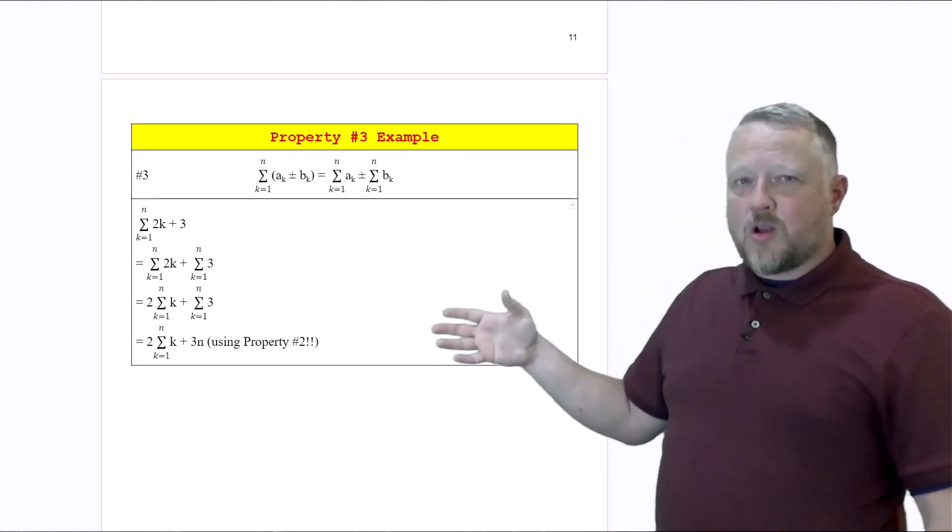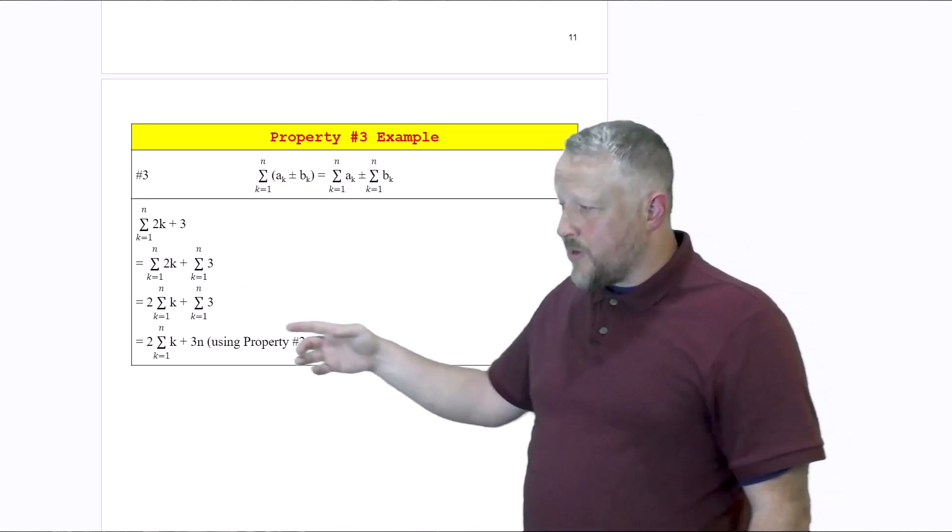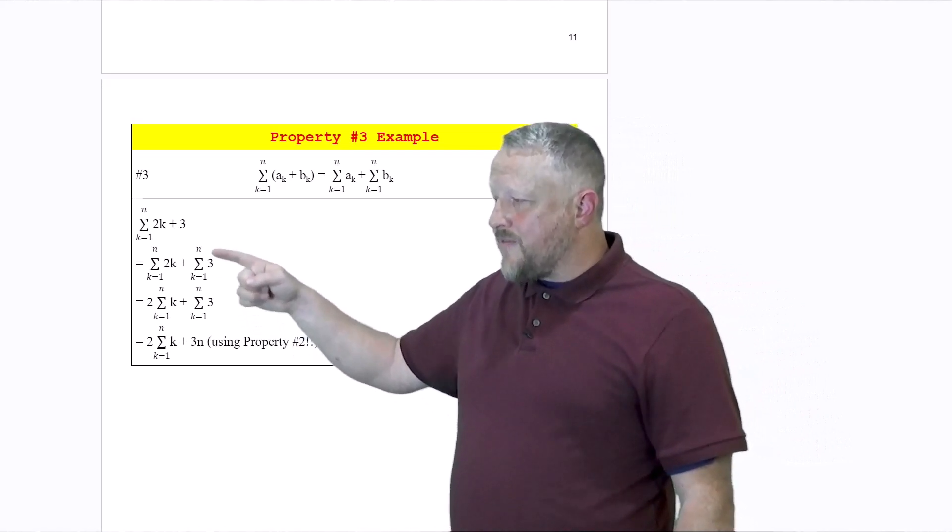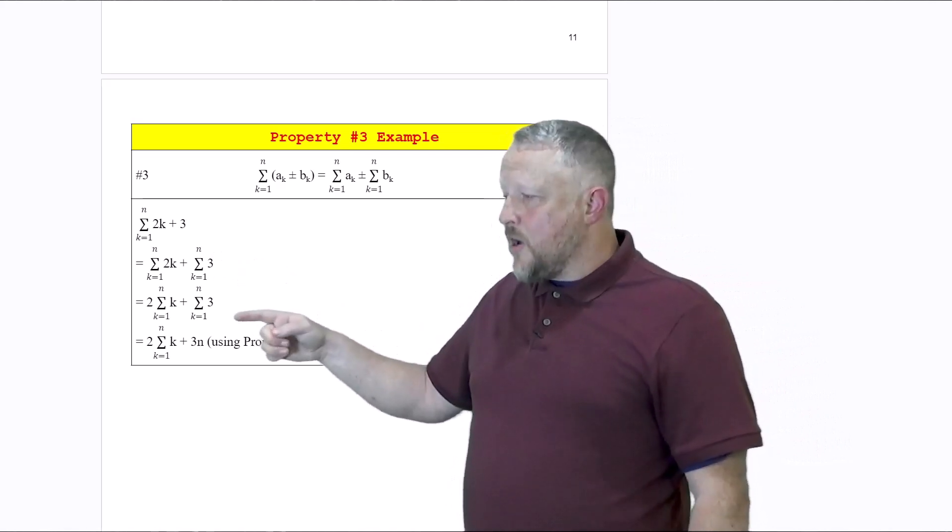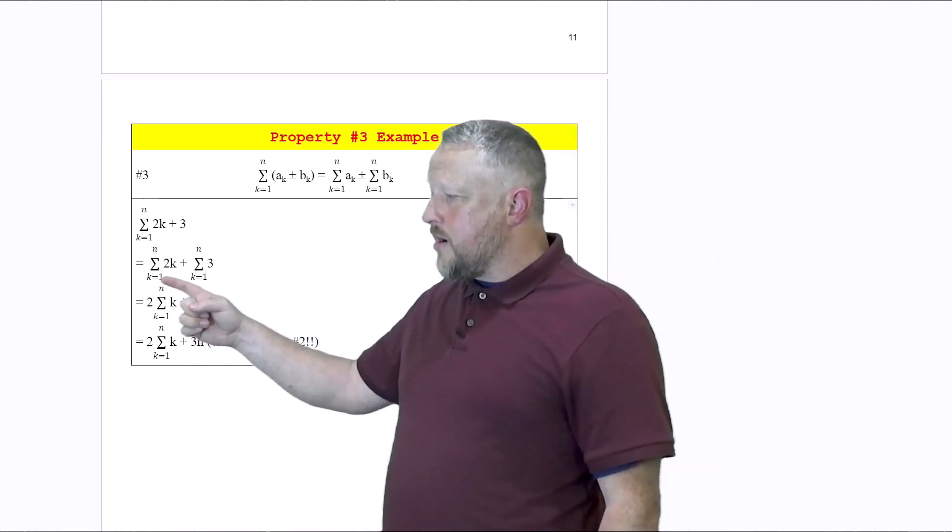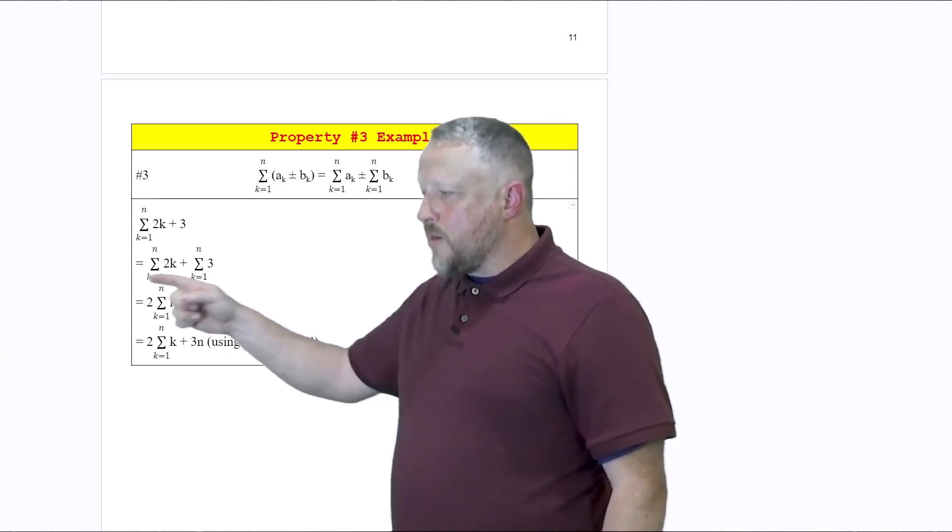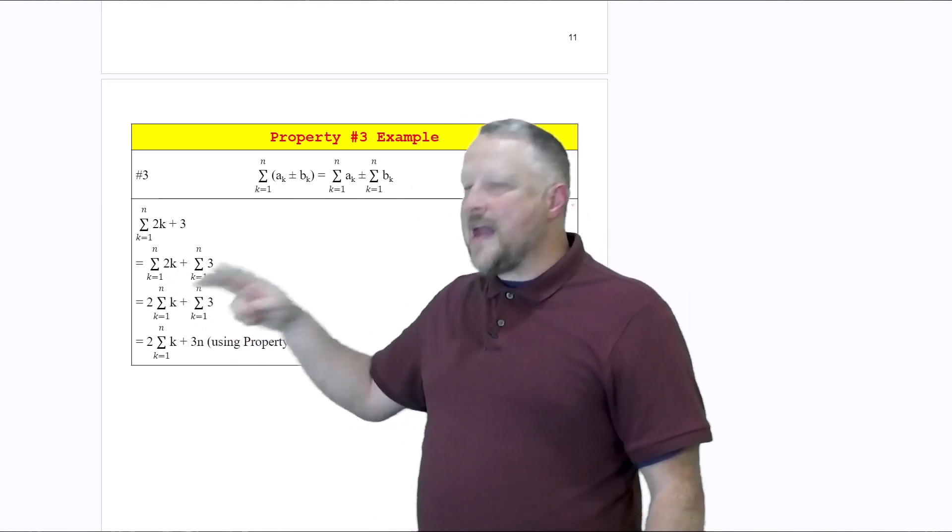Here we have a constant with an N, so we can multiply it like 3N as we wanted to. Or in this example over here, we have a constant in front of a variable, so we can pull that constant out and make that easier to solve too.